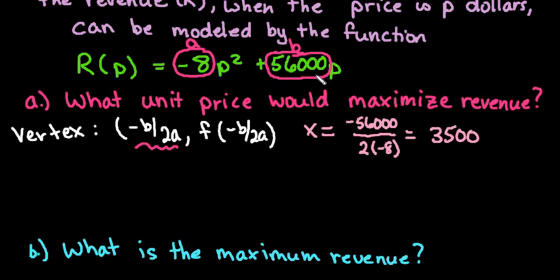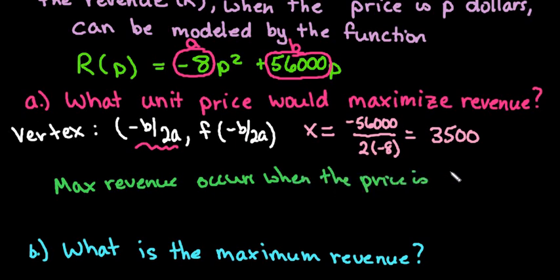So that's the price to make this particular product. So we could say that the maximum revenue occurs when the price is $3,500.